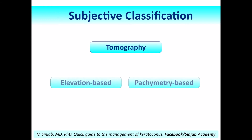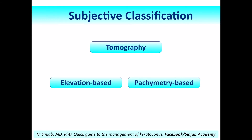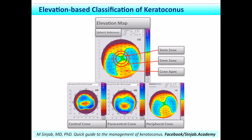The tomography classification is either based on the elevation maps or on the pachymetry map. The one based on the elevation map classifies the location of the cone on the elevation map using the best-fit sphere mode into: central cone, when the center of the cone falls within the central 3mm zone; peripheral cone, when the center falls outside the 5mm zone; and paracentral cone, when it falls in between. This classification is very important for intracorneal segment implantation, which will be discussed in detail when we come to the management modalities.